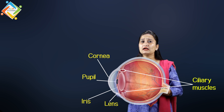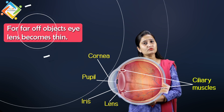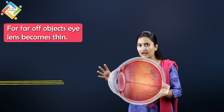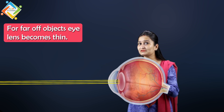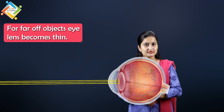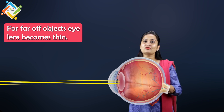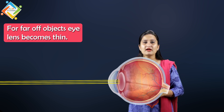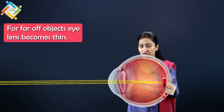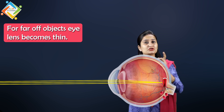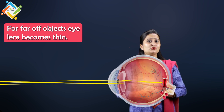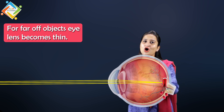If some object is very far away, the ciliary muscles are relaxed. When the ciliary muscles relax, the eye lens is allowed to stretch. When something is stretched, it becomes thin. That is how you can clearly see distant objects.